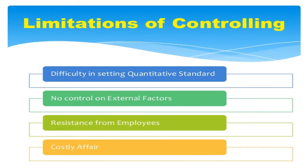These are the six importances of controlling — the topics are very simple and mostly self-explanatory. Coming down to the limitations of controlling, you have four limitations. Please mark this very important. It is a four-marker and a very important one. The first is difficulty in setting quantitative standards.